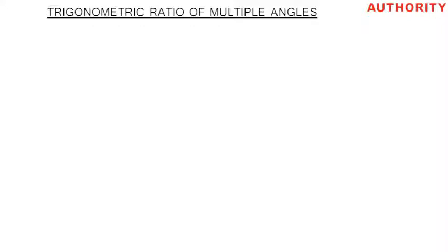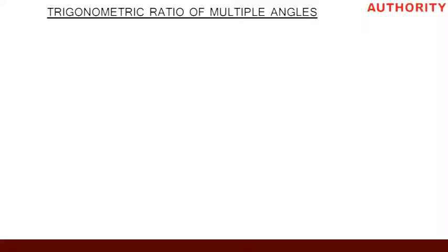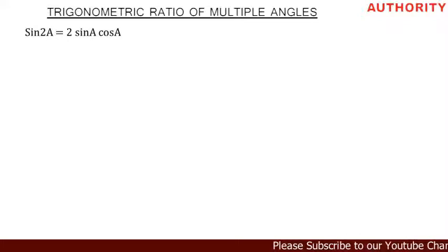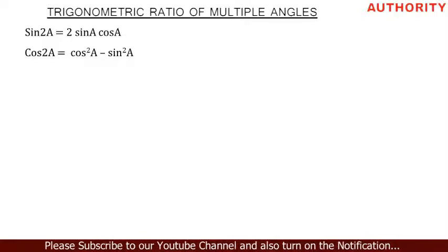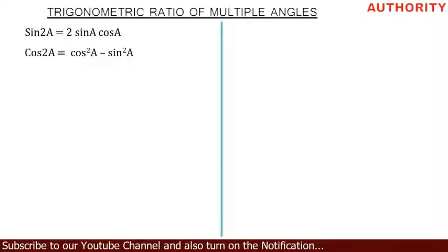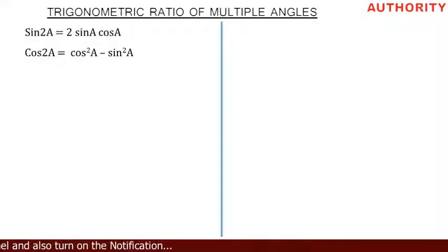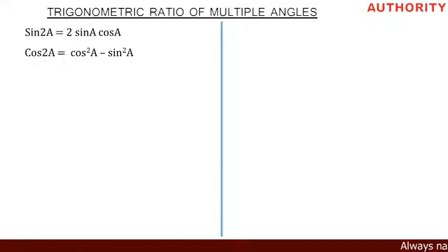Alright, welcome again. Today let's talk about trigonometric ratios of multiple angles. In this lesson, we are going to prove that sine 2A is equal to 2 sine A cos A, and that cos 2A is equal to cos squared A minus sine squared A. Please pay attention — it's very important.